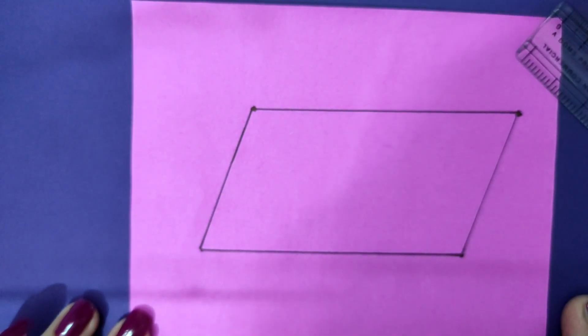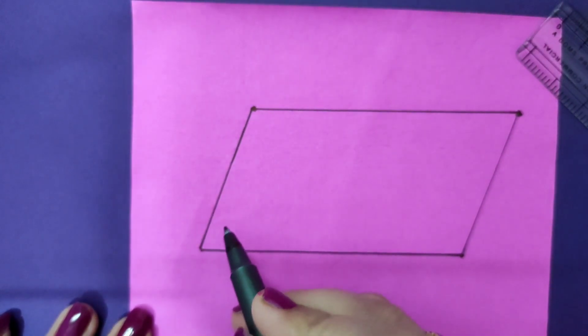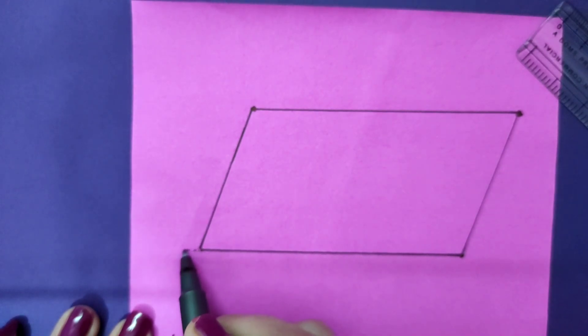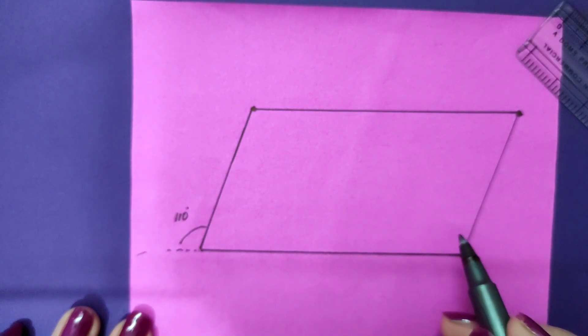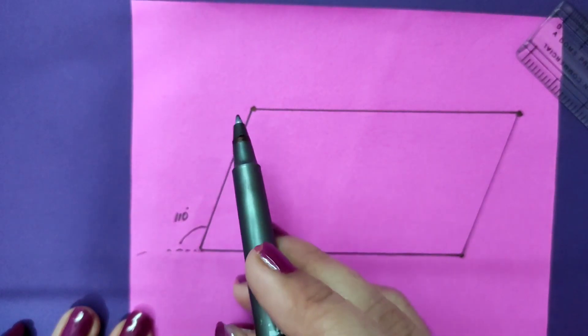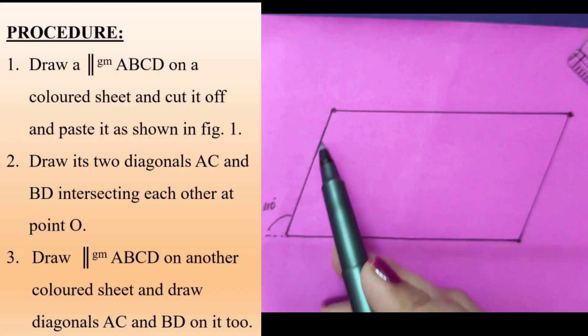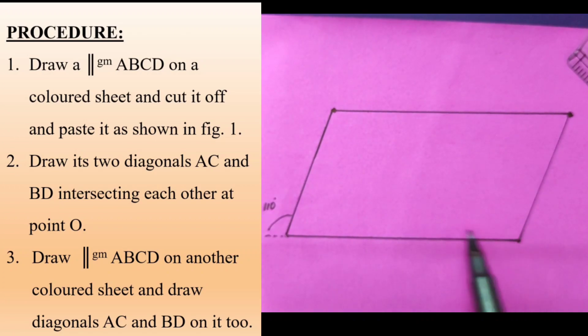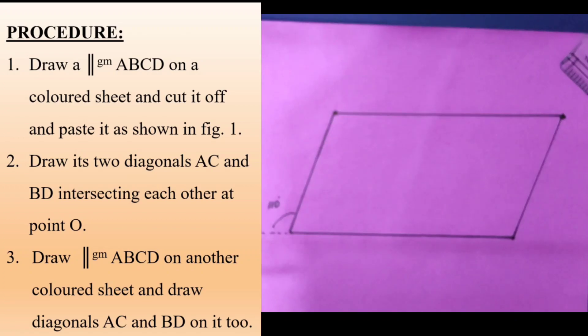This is the parallelogram that I have formed. If you see, this angle was 110 degrees and this angle is 110 degrees. If this is 110 and this is 110, the corresponding angles are equal and hence the lines are parallel. This side is 5, this side is 5. These two sides are parallel and equal, hence this is a parallelogram. Once the parallelogram is done, I'm going to cut it out.